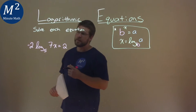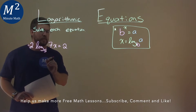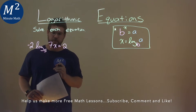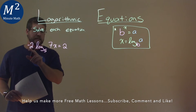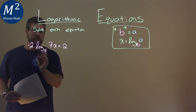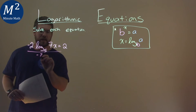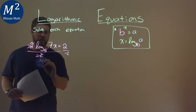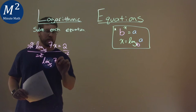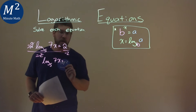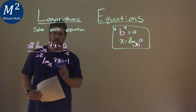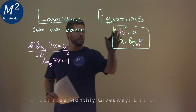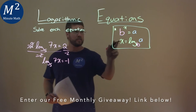We're given this problem: negative 2 times log base 5 of 7x equals 2, and we have to solve this equation. First, I'm going to divide both sides by negative 2 to get the log by itself. This cancels, and we have log base 5 of 7x left over. And 2 divided by negative 2 is negative 1. From here, we have to use our formula — but be careful with the x's.